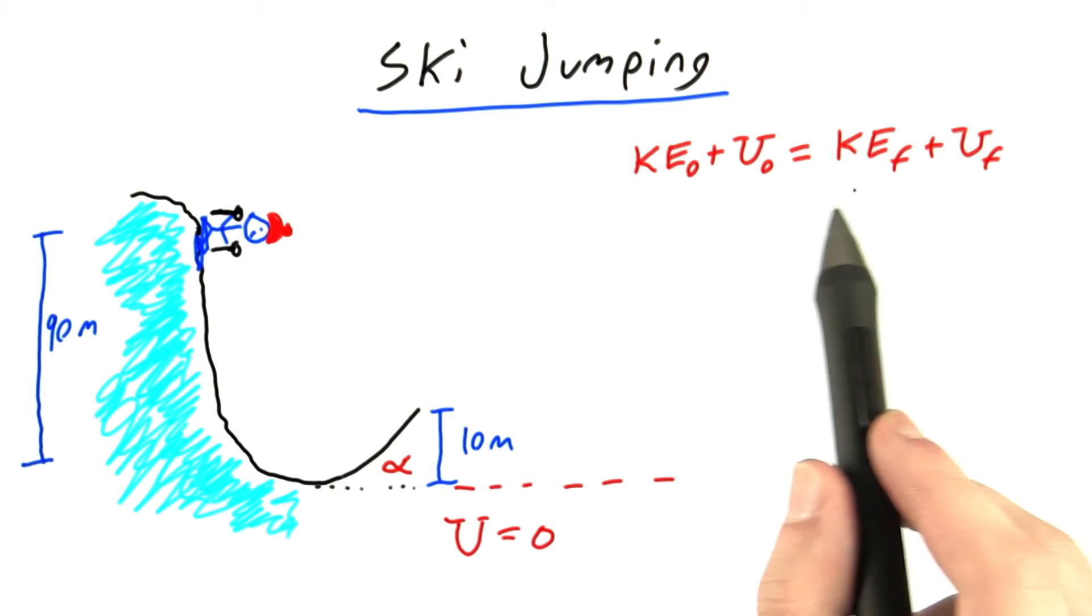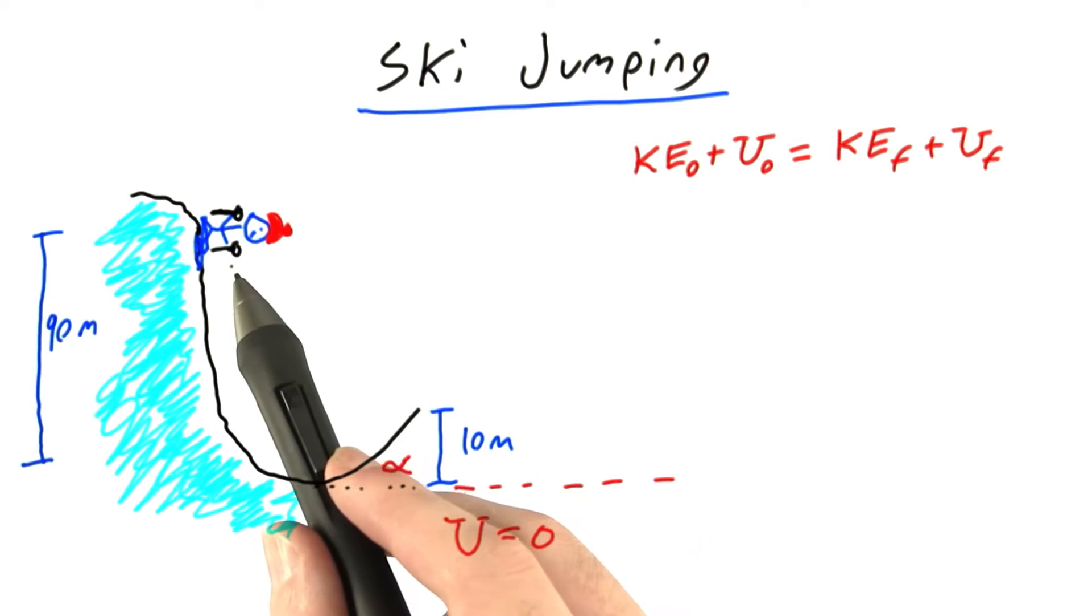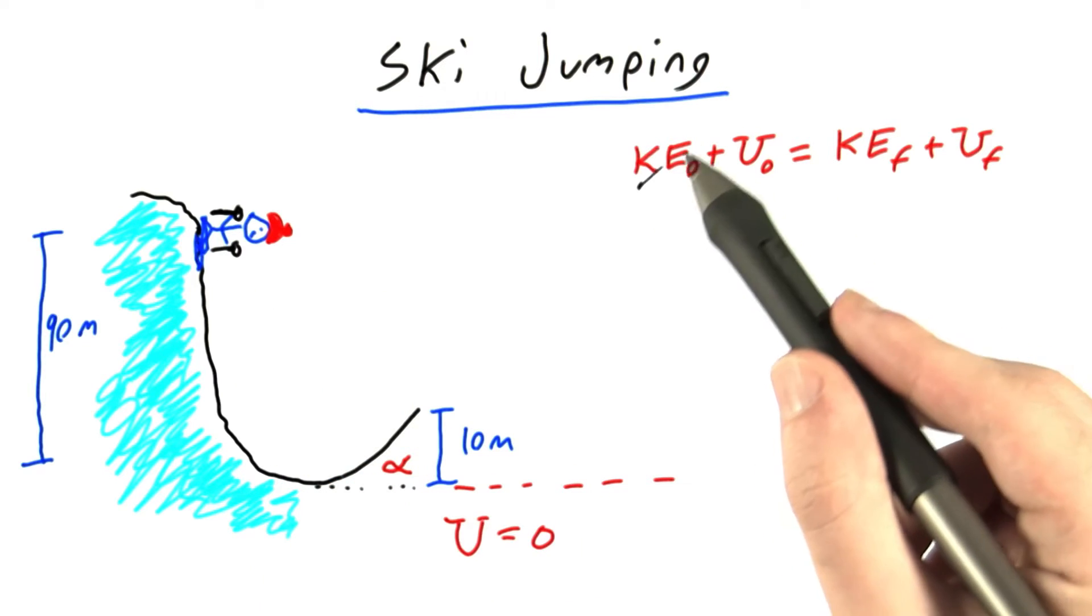We can get rid of one of these four variables already. At the beginning of the jump, the skier isn't moving yet, so we know his kinetic energy must be 0.